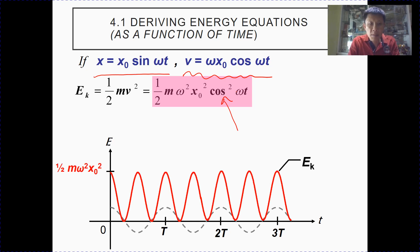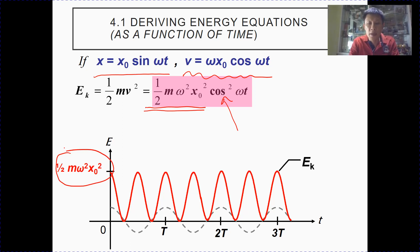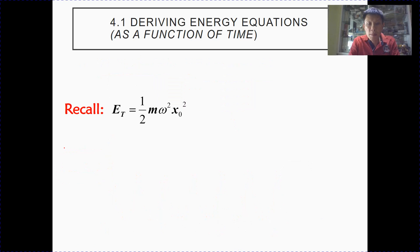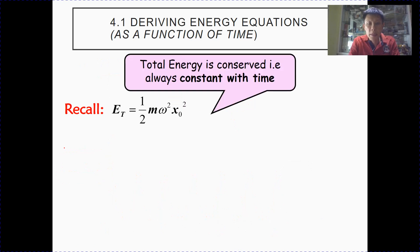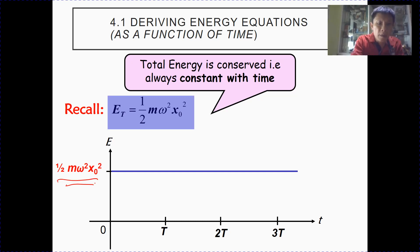Note that the maximum value is given by the amplitude of this expression, which is half m omega squared x₀ squared — consistent with what we derived earlier. For total energy, this is consistent with what we have previously: the total energy does not change at all, so it is constant with time. Graph-wise, it will be a horizontal straight line with this magnitude.